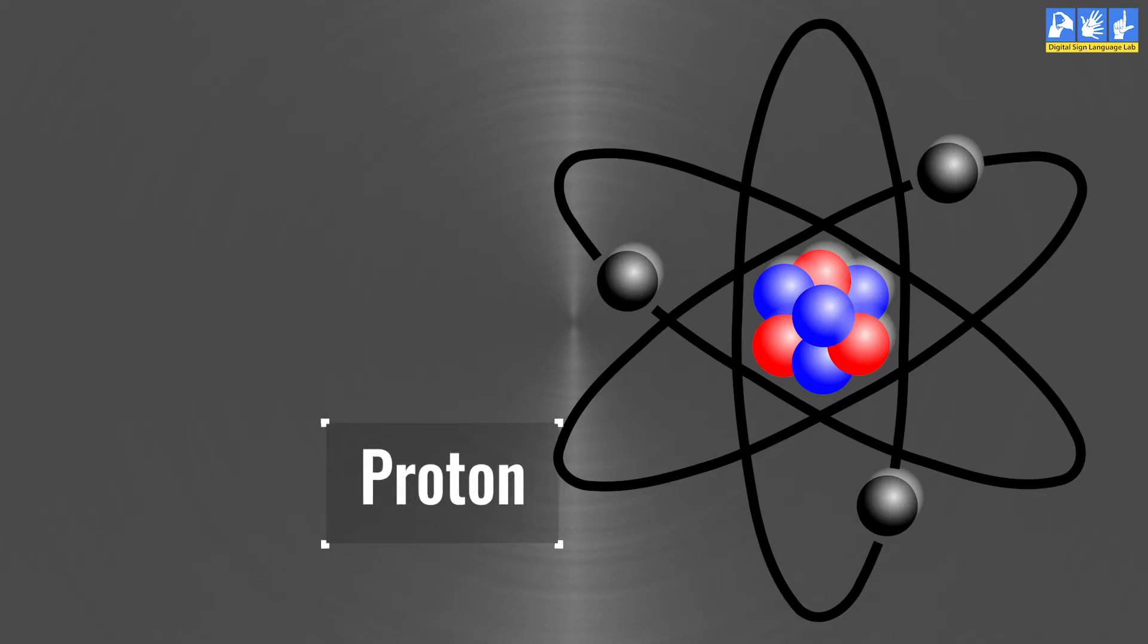The other part of an atom is called protons. Let's see here. Atoms are typically made up of three parts: protons, neutrons and electrons.